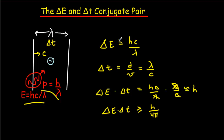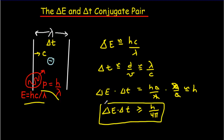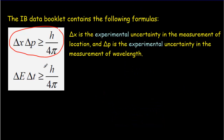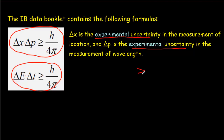This is really just an approximation using a hand-waving argument. This equation is in your IB data booklet — both equations for the two conjugate pairs. The product of those experimental uncertainties is always going to be greater than or equal to h divided by 4 pi.